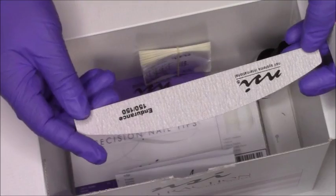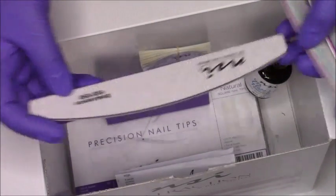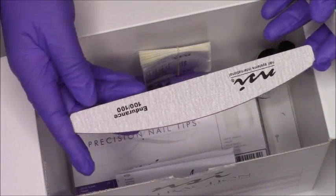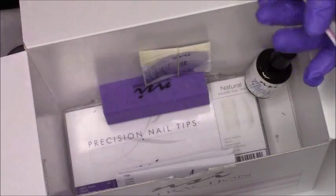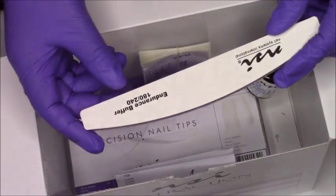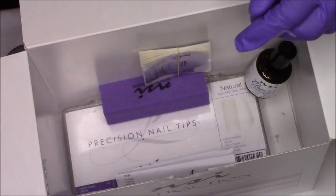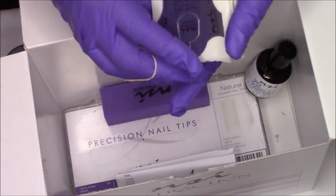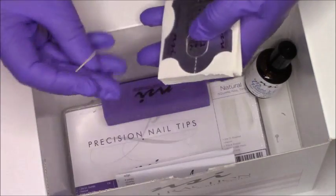It comes with four files. It comes with a 150, 150 endurance, that's nice. 100, 100 grit. 180, 180 grit. A 180 by 240 buffer. Also comes with nail forms for sculpting your nails. I'm not sure how many is in here, I don't feel like counting them.